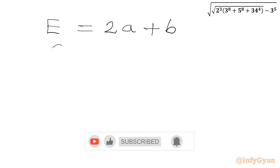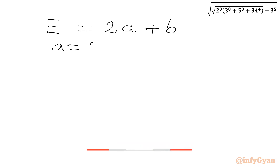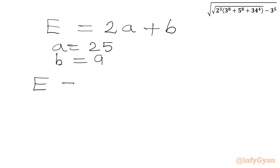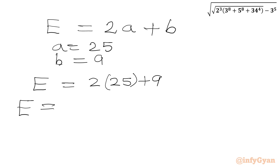Now we know the values of a and b: a was 25 and b was 9. So E = 2 times 25 plus 9 = 50 + 9. The answer comes out to 59.